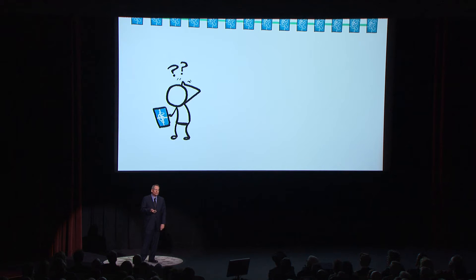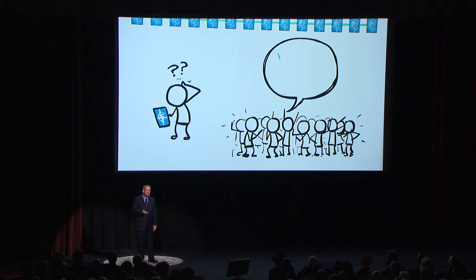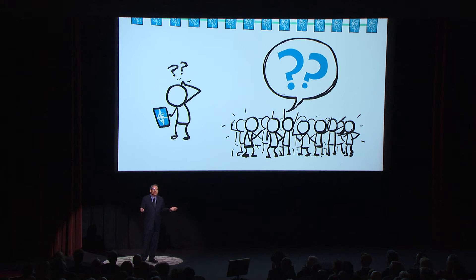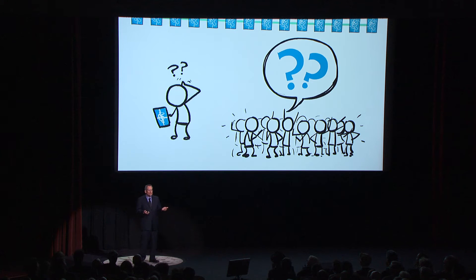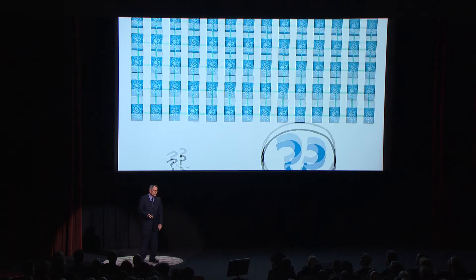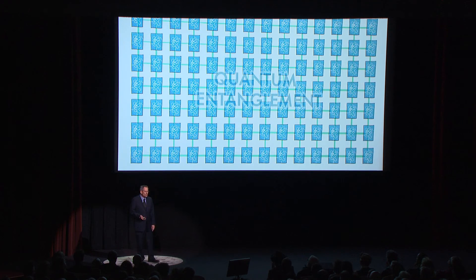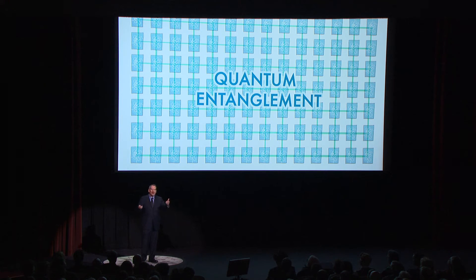And if each of 100 people read a different page and then later we get together to talk about what we've read, we'll still know almost nothing about what's in the book. That's because for the quantum book, the information isn't printed on the individual pages. The information resides almost entirely in how the pages are correlated with one another. That's the characteristic feature of quantum entanglement.